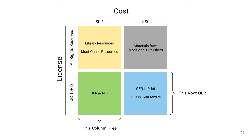I'd also encourage you to think about this 2x2 table for a moment. In the rows, we have resources that are licensed in different ways, and in the columns, we have things that cost different amounts of money.